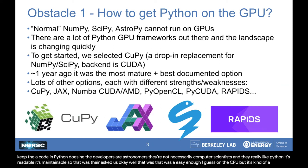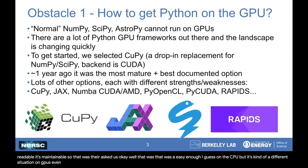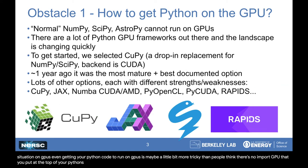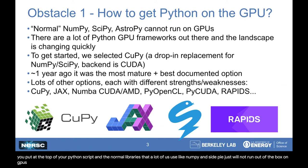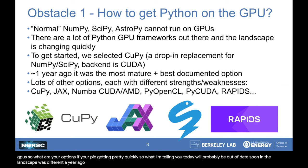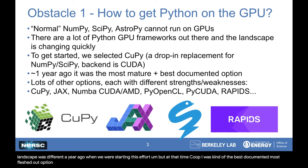That was easy enough on the CPU, but it's kind of a different situation on GPUs. Even getting your Python code to run on GPUs is maybe a little bit more tricky than people think. There's no 'import GPU' that you put at the top of your Python script, and the normal libraries that a lot of us use, like NumPy and SciPy, just will not run out of the box on GPUs. So what are your options if you're a Python programmer? Things are changing pretty quickly, so what I'm telling you today will probably be out of date soon. At that time, CuPy was kind of the best documented, most fleshed-out option, so that's what we chose.